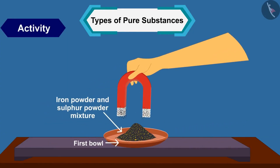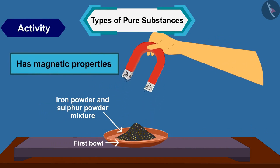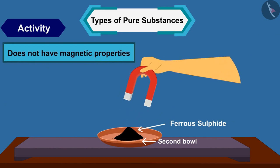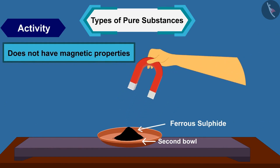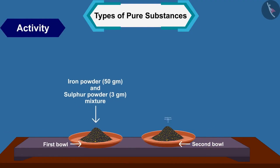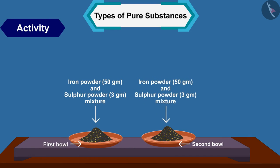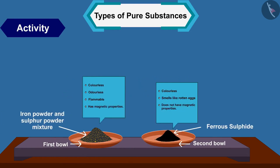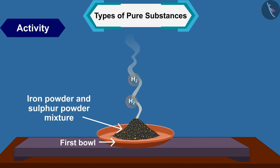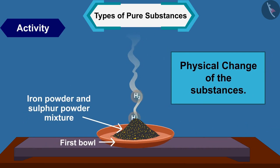Now check the magnetic properties in both cups. Bring a magnet near the material and check if it is attracted to the magnet. The material obtained in cup one has magnetic properties, while the material obtained in cup two does not have magnetic properties. Although initially the given substances were similar, the materials obtained in both cups showed different properties.